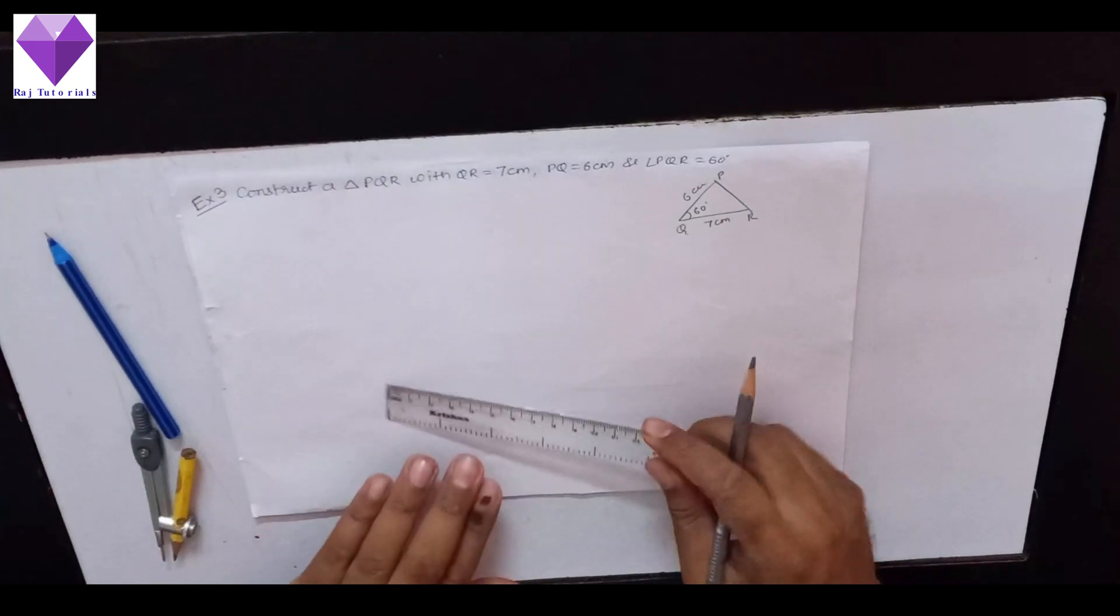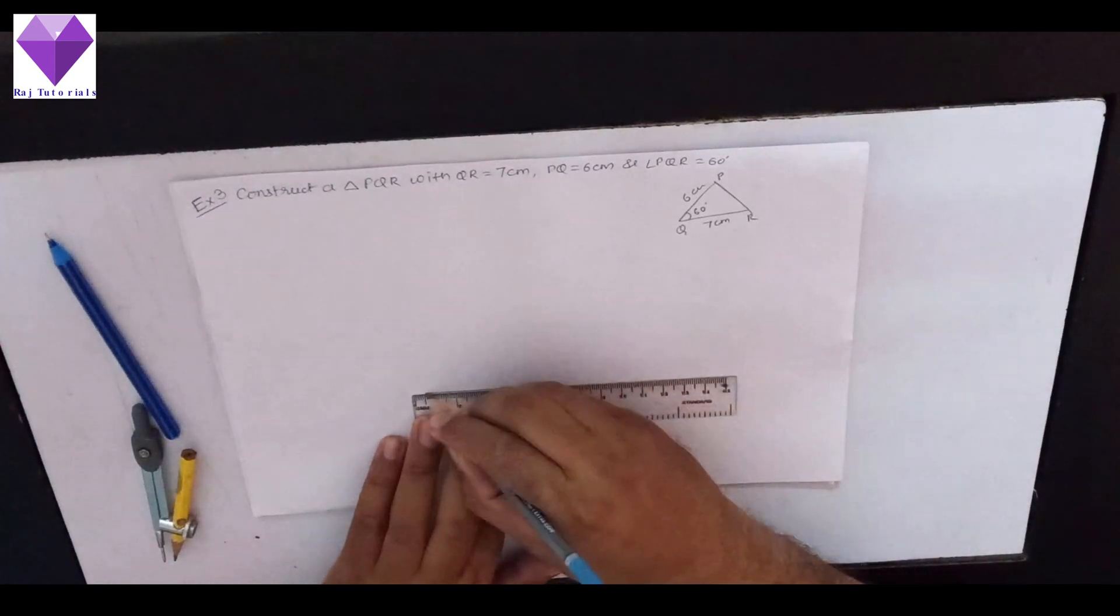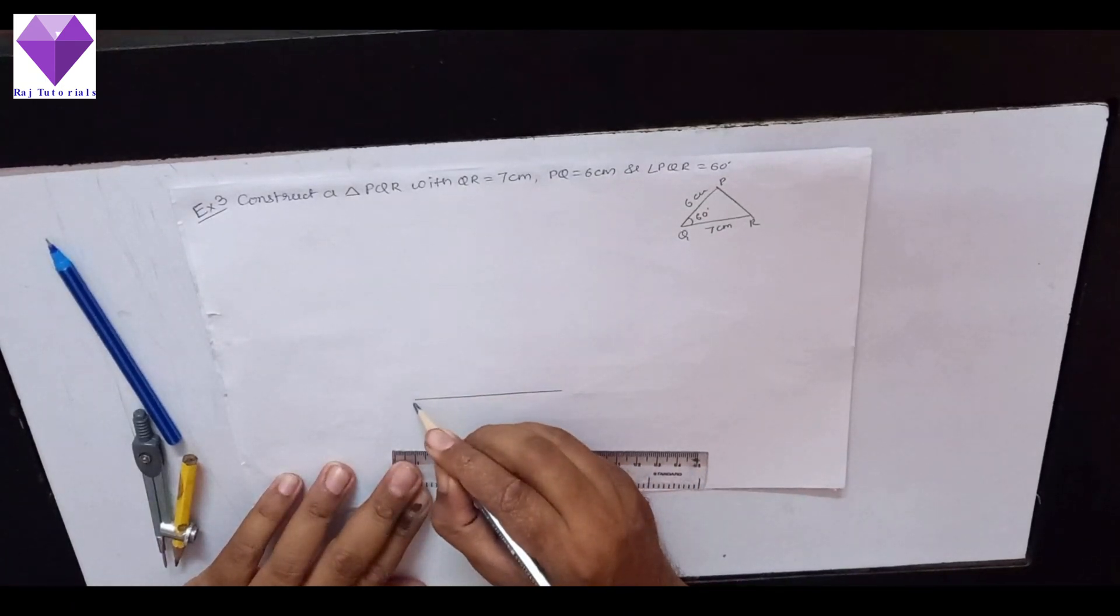first of all, we will construct QR equal to 7 cm.